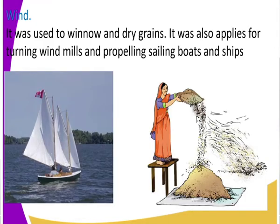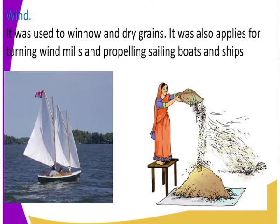Another source of energy is wind. Wind was used in winnowing and drying grains — winnowing meaning the separation of chaff from clean cereals. It was also used to dry grains, to turn windmills, and to propel sailing boats and ships. For example, in early transport, boats would have a piece of cloth tied to them that would be propelled by the wind.